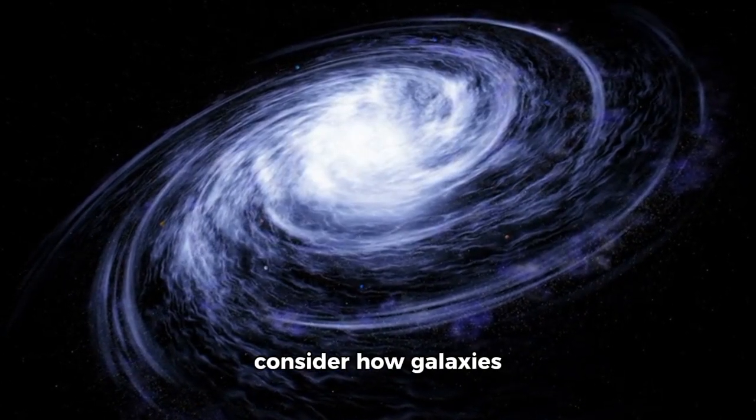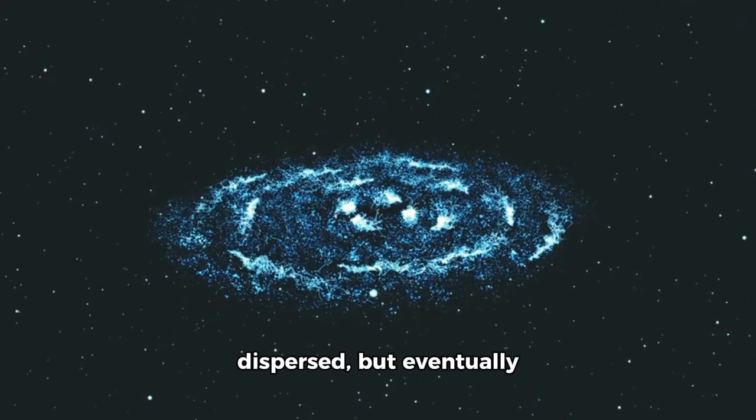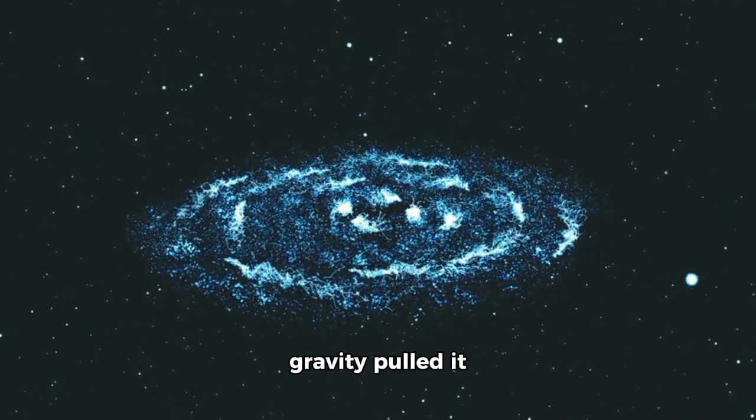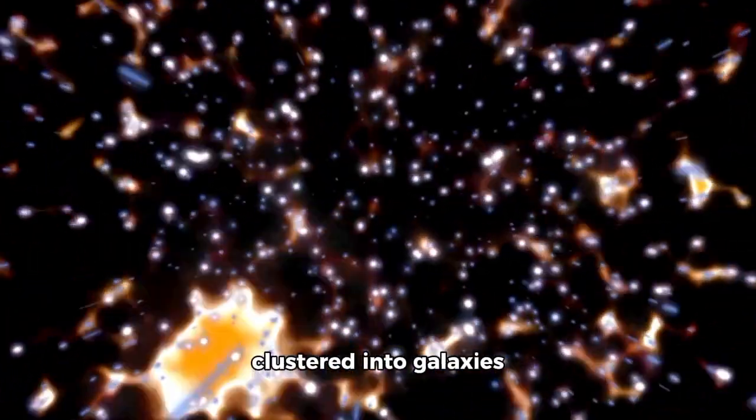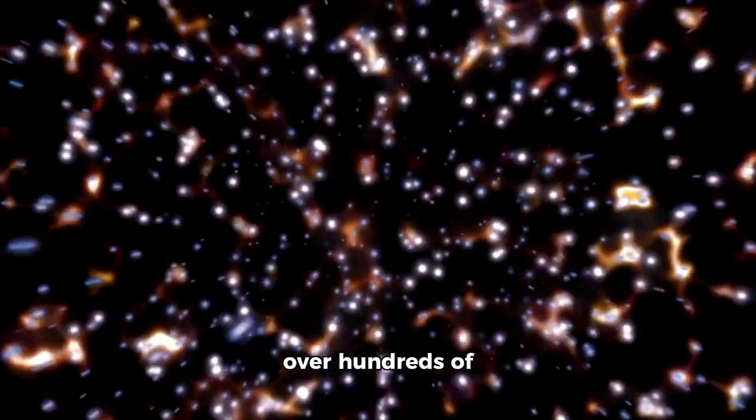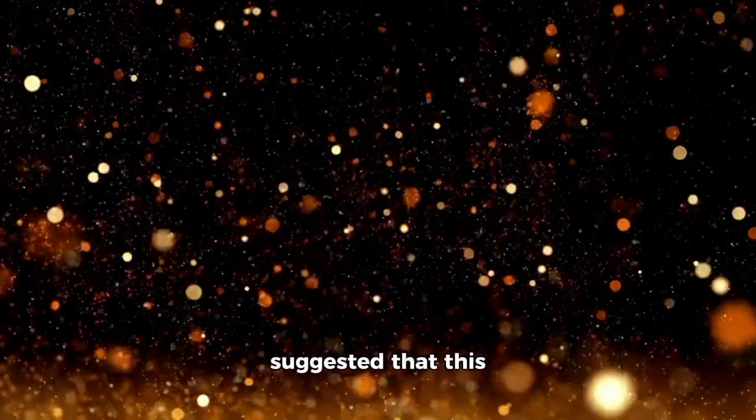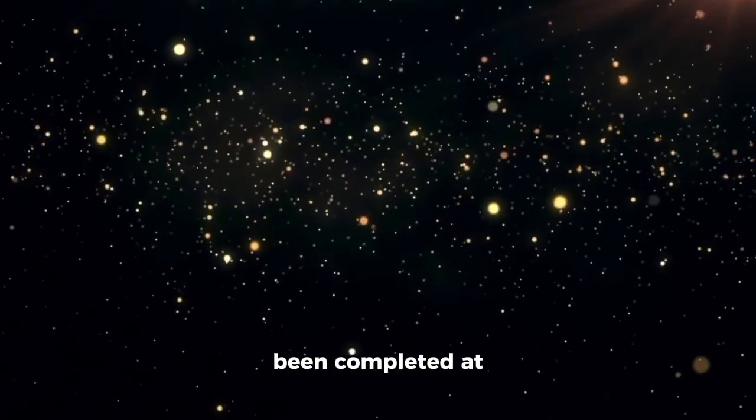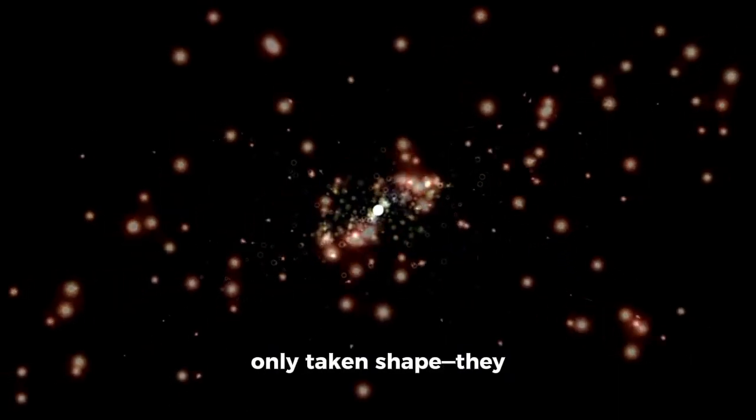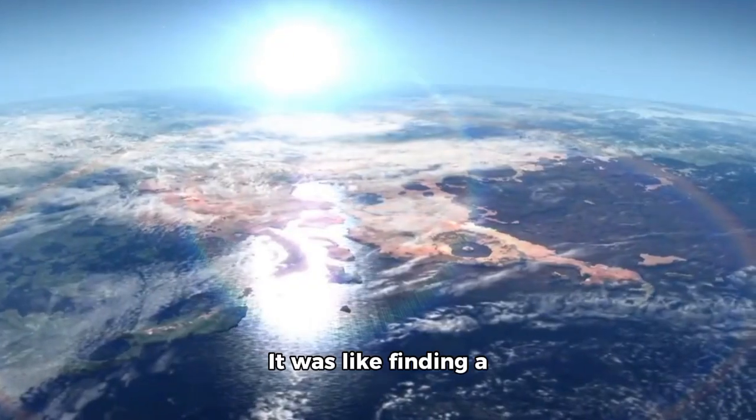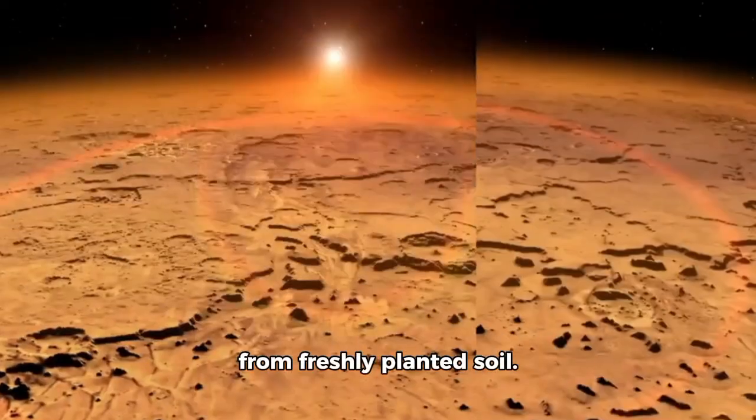To understand why this is so confounding, consider how galaxies are believed to change. In the early universe, matter was thin and dispersed, but eventually gravity pulled it together into shattered clouds that formed stars. Those stars then clustered into galaxies over hundreds of millions, even billions of years. But what Webb observed suggested that this procedure had already been completed at impossible speed. These galaxies had not only taken shape, they had thrived. It was like finding a fully grown ancient redwood tree sprouting from freshly planted soil.